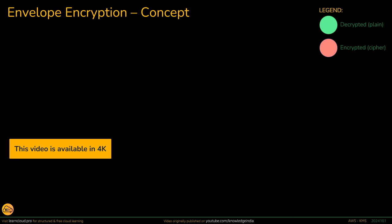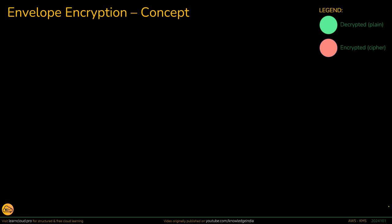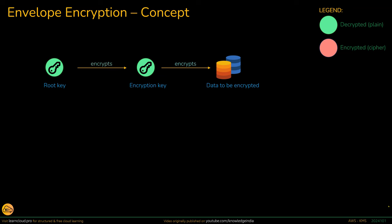Let's talk about envelope encryption as a concept first. The important thing to understand is that the key which you are using to do the encryption further gets encrypted in order to keep it secure. So, let's say there is some data which we want to encrypt, and in order to encrypt this data, we would require a key. In the case of envelope encryption, the key actually used to encrypt the data further gets encrypted by another key in order to keep it secure. You can see a kind of chain getting created here. The ultimate key on the left-hand side is responsible for encrypting the encryption key, hence the encryption key is also kept secure — you do not keep the encryption key in plain format.